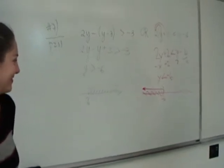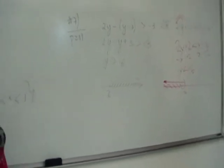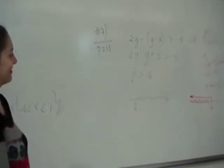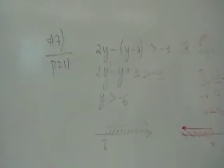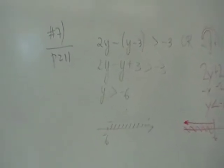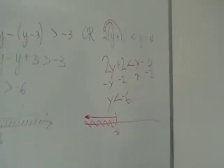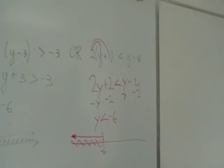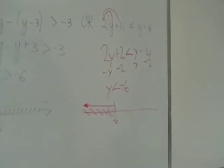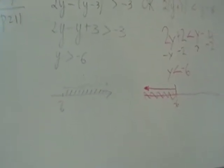These are both simple inequalities. Svitlana distributed the negative sign, getting 2y minus y minus 3 plus 3 greater than negative 3, and ended up with y greater than negative 6. For Christian, distributing gives 2y plus 2 less than y minus 4, then y less than negative 6.